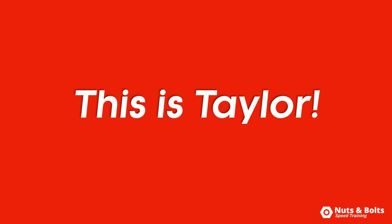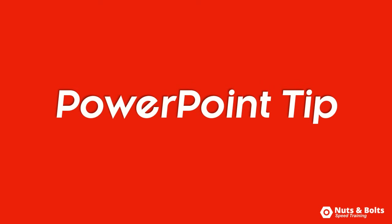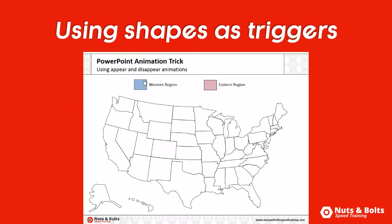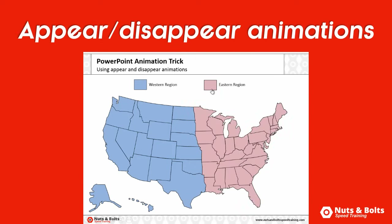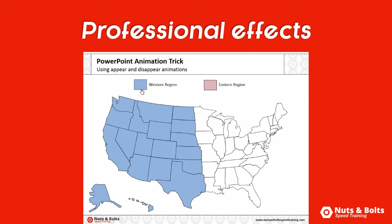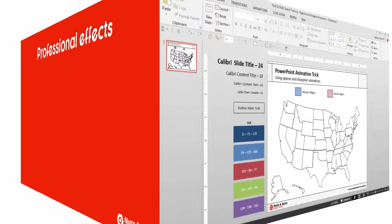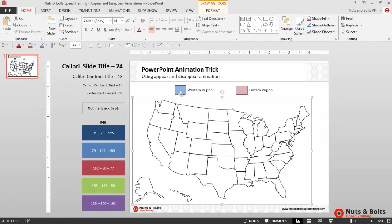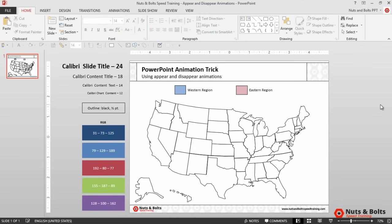This is Taylor from Nuts and Bolts Speed Training with another PowerPoint trick to help you make happy hour. Using the shapes on your slide as trigger objects for the appear and disappear animations to create professional effects within your presentation. Here in PowerPoint I have a vector map of the United States and two rectangles up top that I want to use as trigger objects to fire off these animations.